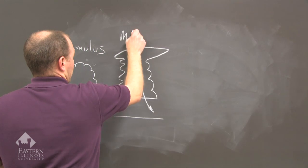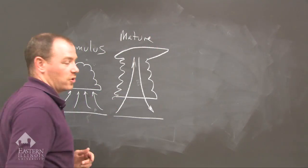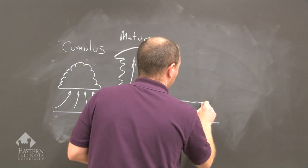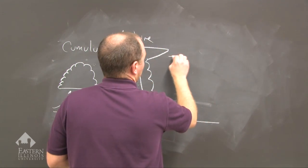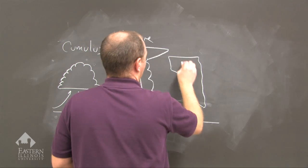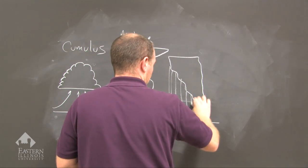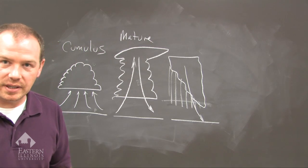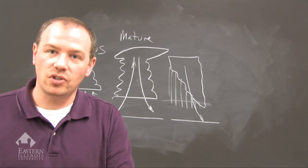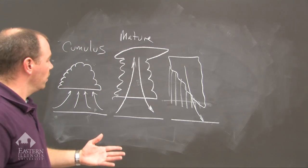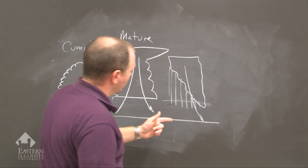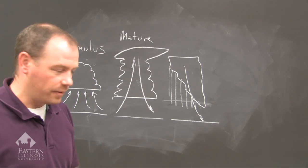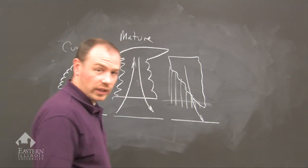That is the mature stage of basic thunderstorm development. The last stage is when you have this cumulonimbus and you have a big downdraft. What happens is that downdraft cuts off the updraft. And so when you cut off the updraft, the whole system falls apart and you get only precipitation.